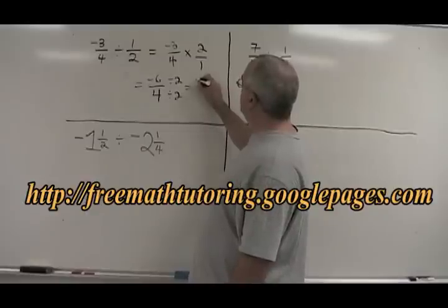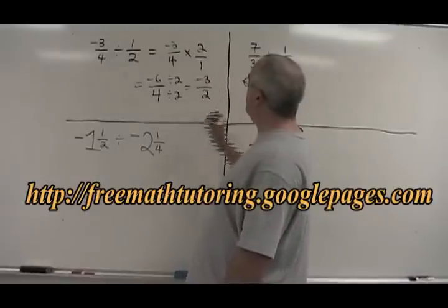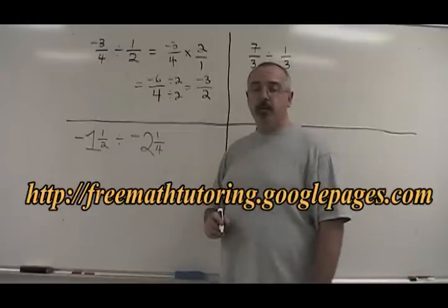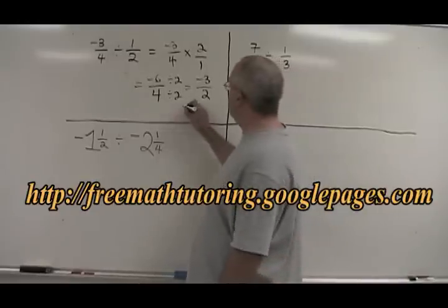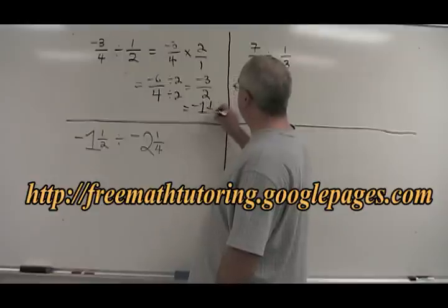Negative 6 divided by 2 is negative 3, 4 divided by 2 is 2. Our answer is negative 3 halves, but if we wish we can convert it into a mixed number of negative 1 and a half.